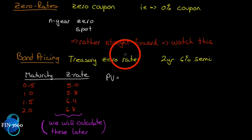Let's look back at our fixed income course. When we got to bond pricing, there were two prominent calculations: number one, find the present value of a bond given the coupon rate, the term to maturity, and the market interest rate; or number two,